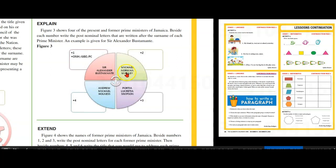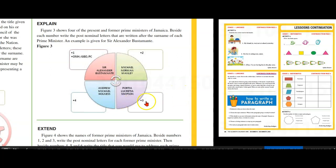Michael Norman Manley — what were his nominal letters? Portia Lucretia Sims-Miller — what would have been the letters for her name? And again for Andrew Michael Holness.